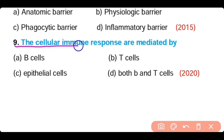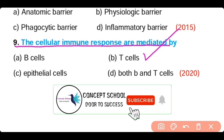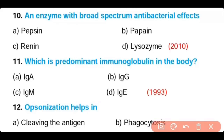Question number 9. The cellular immune response is mediated by: B cells, T cells, epithelial cells, or both B and T cells. The correct answer is Option B. The cellular immune response is mediated by T cells.